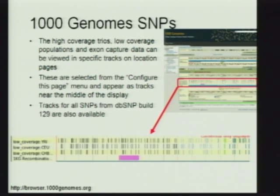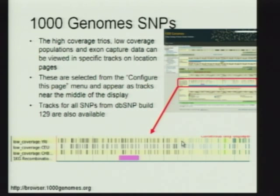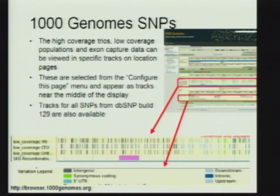The SNP tracks are based on the populations. Here's an example of what they look like and where they are on the page when you zoom in and take a look at them. Here we have three of the SNP tracks, and the recombination hotspots are also displayed. The SNPs turn different colors — the colors are associated with how they're annotated within genes. In this case, these SNPs are just upstream of a gene, so when we have these light blue SNPs, those are color-coded for upstream of genes.